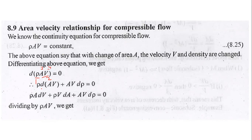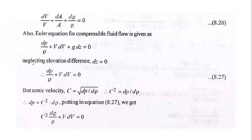Applying the product rule differentiation, and then dividing the whole expression by ρ·A·V, we get: dV/V + dA/A + dρ/ρ = 0. When we apply Euler's equation for compressible flow, we get: dp/ρ + V·dV = 0.